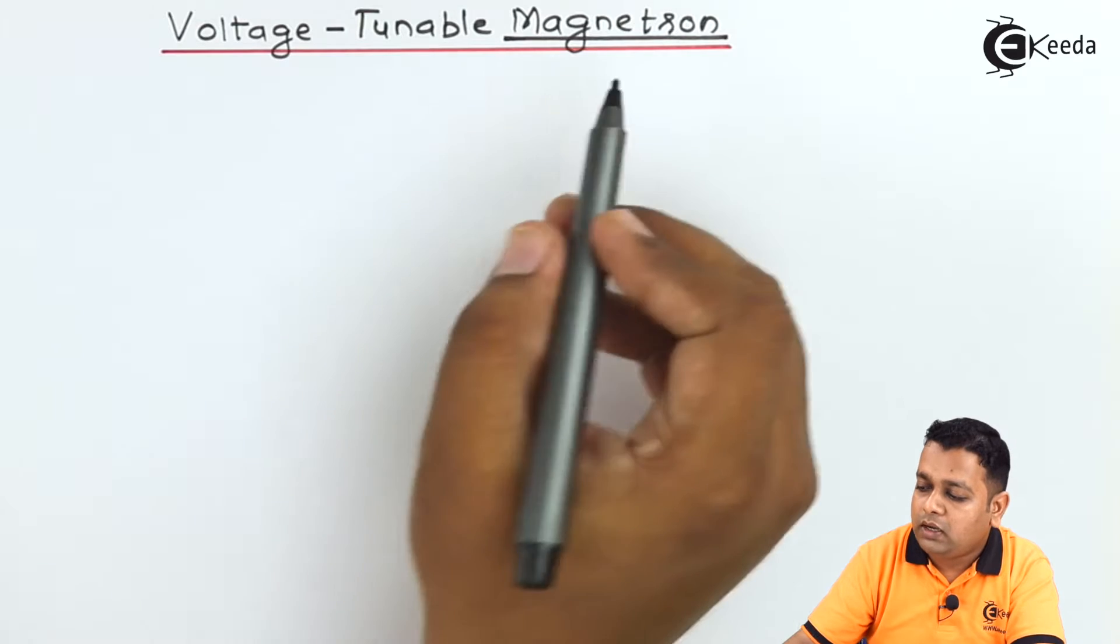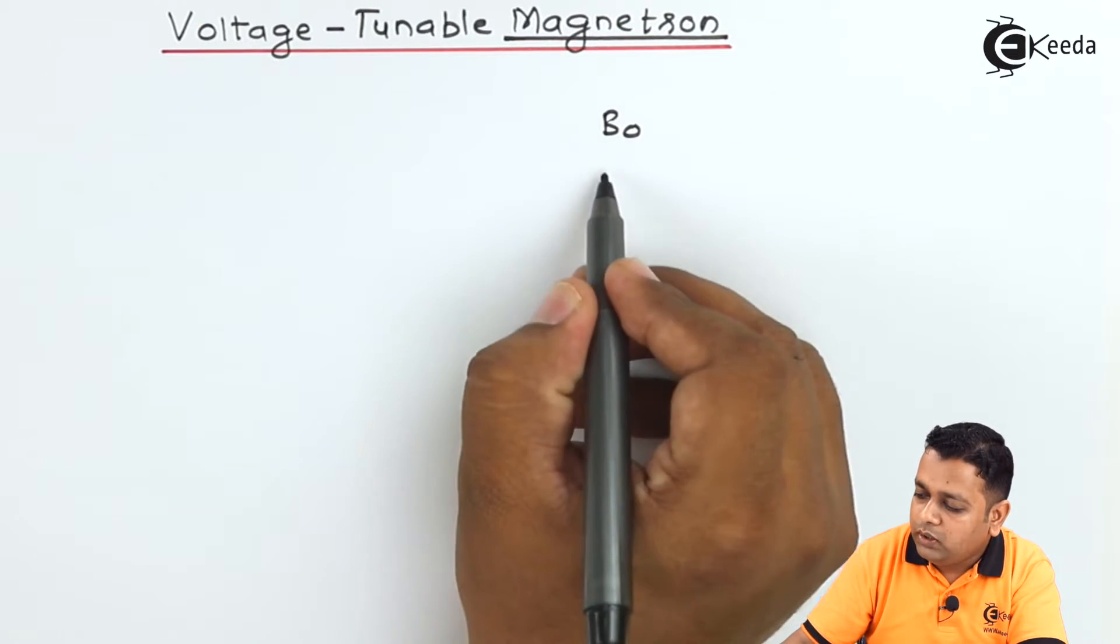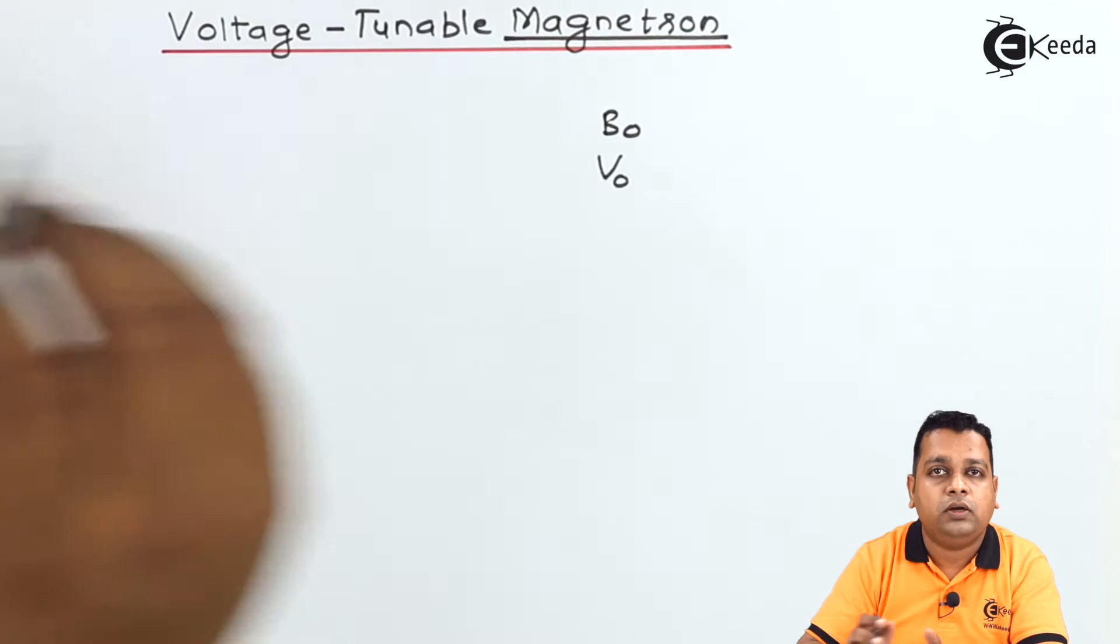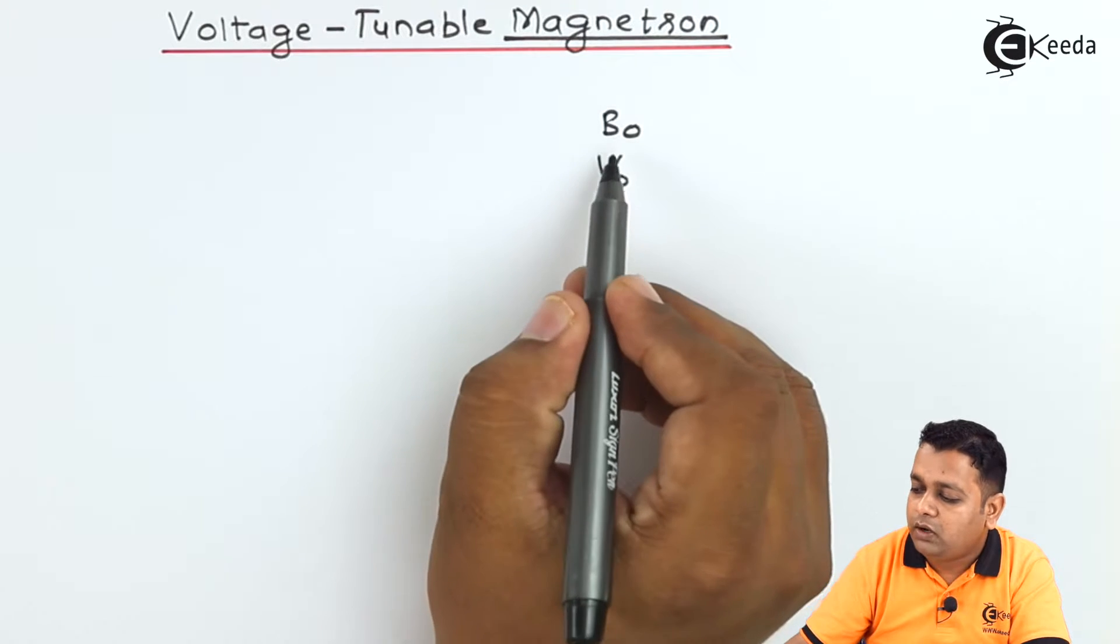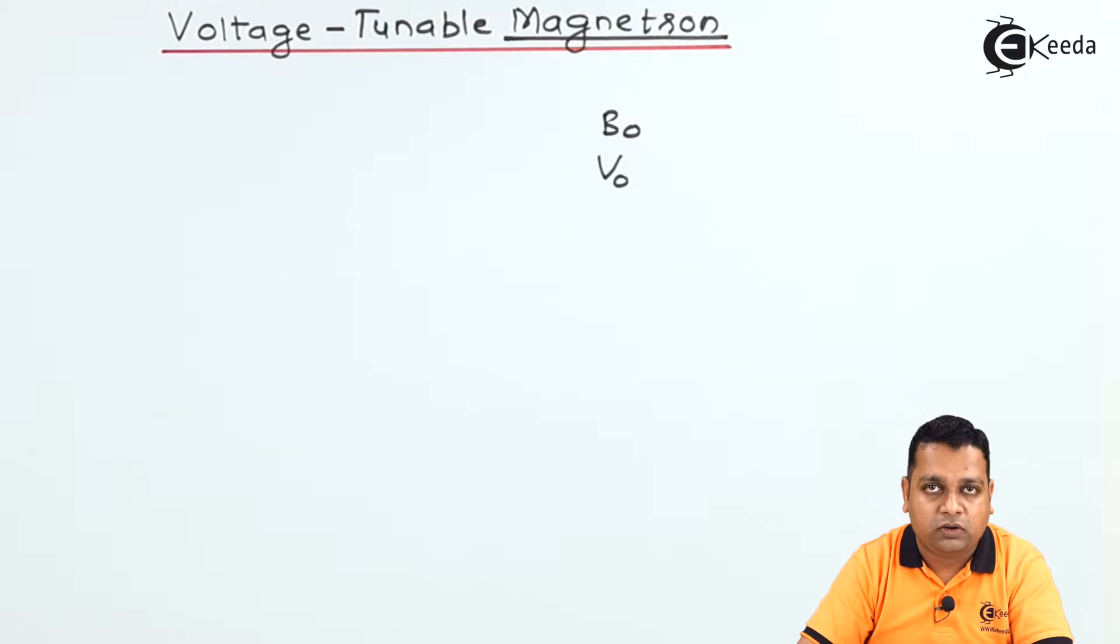Therefore, with the help of the magnetic field that we generally denote by B0 and the potential between the two electrodes cathode and anode V0, we control the path of the electron in the magnetron here.